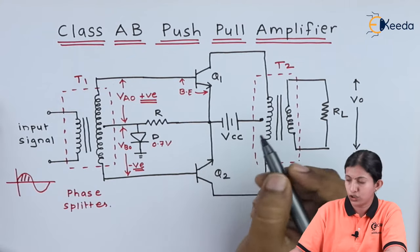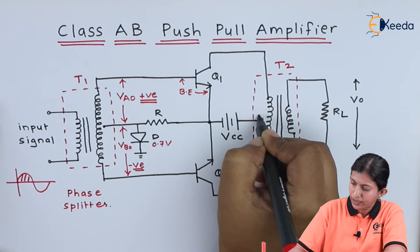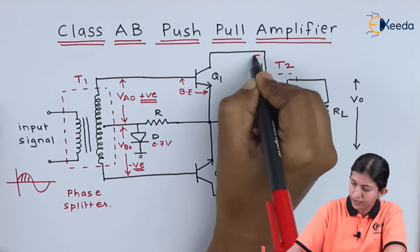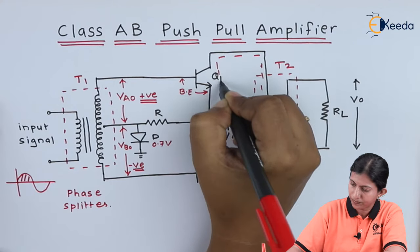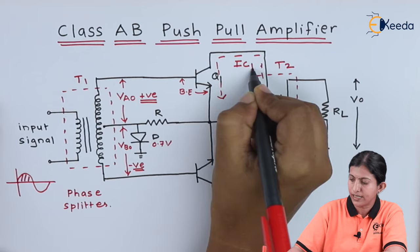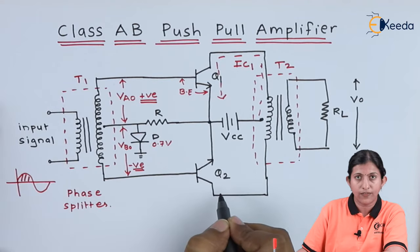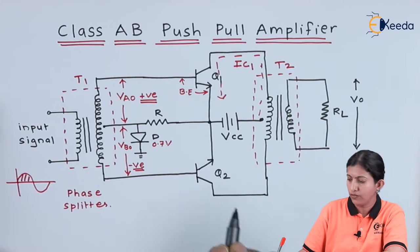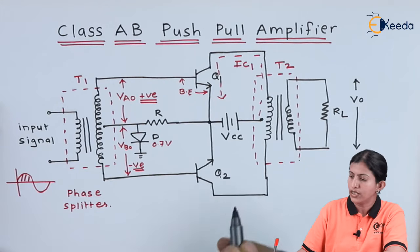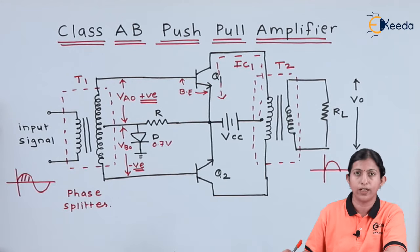Now the direction of the current: current IC1 will flow through the primary winding of the output transformer in this direction. During the positive half cycle, no current flows through transistor Q2. So the output is available because of only transistor Q1.